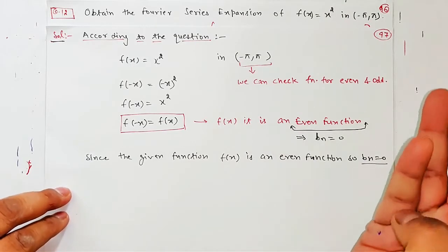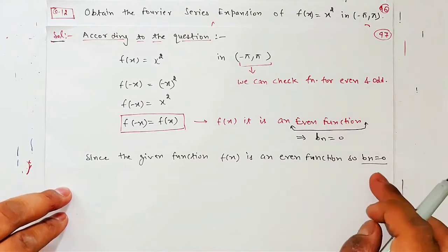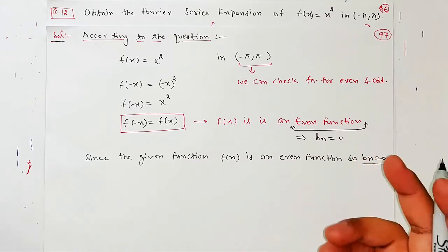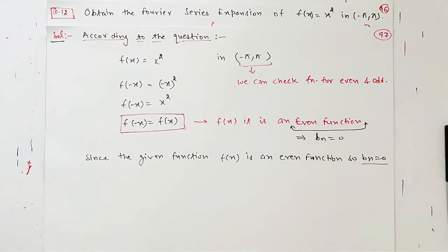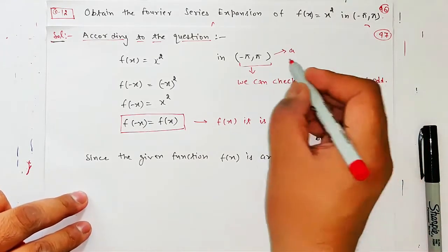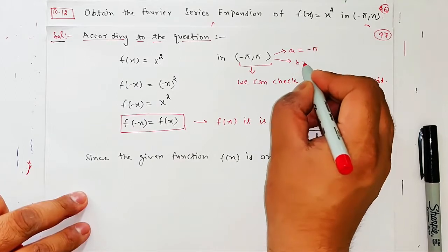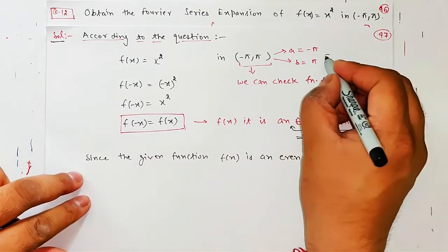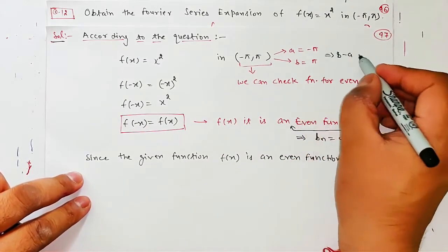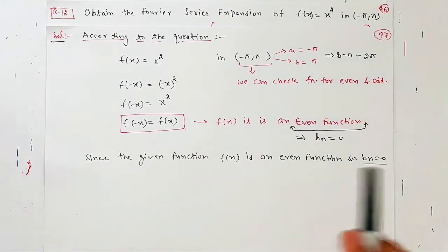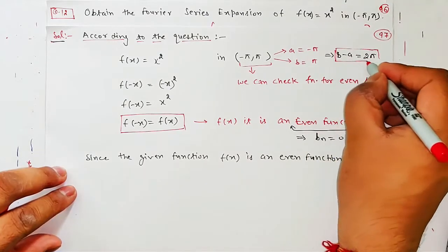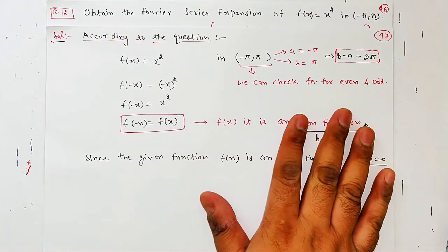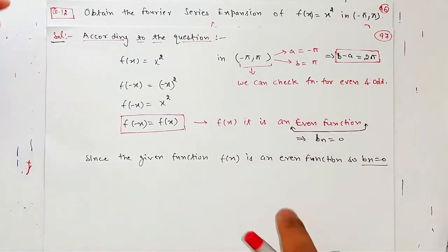Since the given function f(x) is an even function, so bₙ will be equal to 0. Toh aapki 3 integrations mein se — a₀, aₙ aur bₙ mein se — bₙ toh nikal gaya. Toh ek kaam toh ho gaya, ek integration toh khatam hogi. Baaki 2 integrations bachi, ab un 2 integrations mein bhi aapko kuch faayda milta hai, uski baat hum karenge. Bata dena chahiye — ek 'a' chahiye, woh aapki lower limit hoti hai, minus pi. Ek 'b' chahiye, woh aapki upper limit hoti hai, pi.